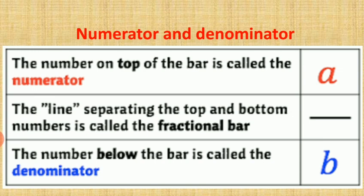What is numerator and what is denominator? The number on the top of the bar is called numerator. Here you can see 'a', then a line, and 'b' — so 'a' is called numerator. The line separating the top and bottom number is called the fraction bar. The number below the bar is called denominator, so 'b' is denominator.